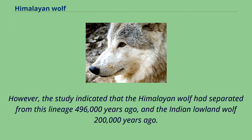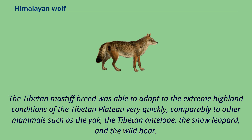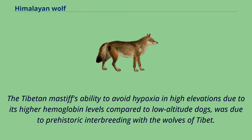The Tibetan Mastiff breed was able to adapt to the extreme highland conditions of the Tibetan plateau very quickly, comparably to other mammals such as the yak, the Tibetan antelope, the snow leopard, and the wild boar. The Tibetan Mastiff's ability to avoid hypoxia in high elevations due to its higher hemoglobin levels compared to low-altitude dogs was due to prehistoric interbreeding with the wolves of Tibet.